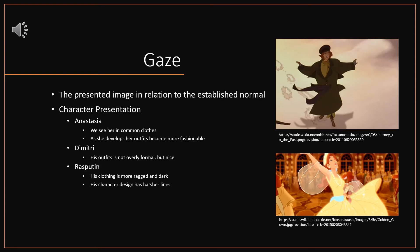The next strategy of visual rhetoric I'm going to look at is gaze — the presented image we are given in relation to what we as the audience are expecting. We can see this in the various character designs in Anastasia. When we look at Anastasia specifically, her outfit design changes as her character progresses. At the beginning of the movie she's wearing what we would expect of a princess, and later when we see her as an orphan, she is wearing clothes we would expect a commoner to wear. The progression of her outfits matches her character growth, eventually fitting what we expect of royalty.